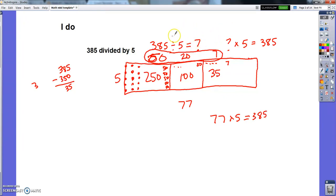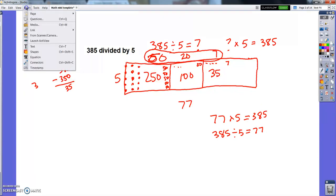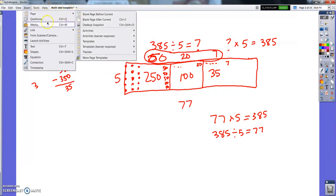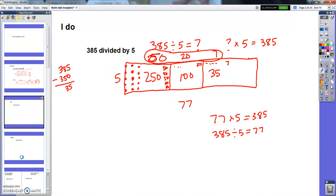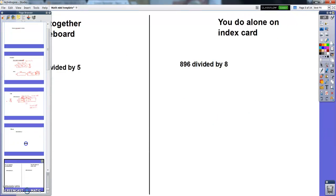Look, I've found my answer up here. So I built an area model, and it took me 50, 70, 77 dots to do it. So I know that 77 times 5 is 385, which means I know going backwards that 385 divided by 5 must be 77. Let me do another one before I have you do one by yourself, because I think that'll be helpful.